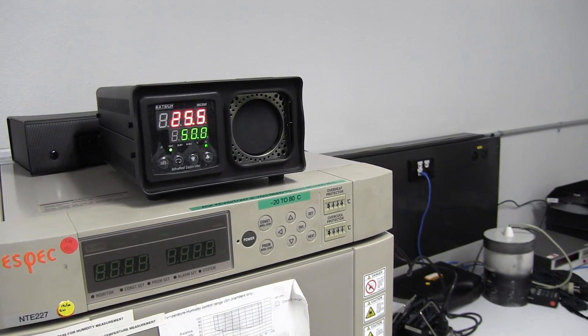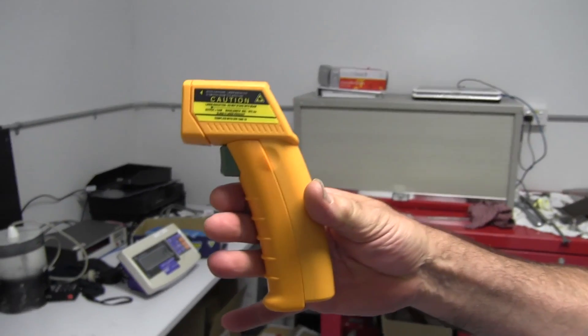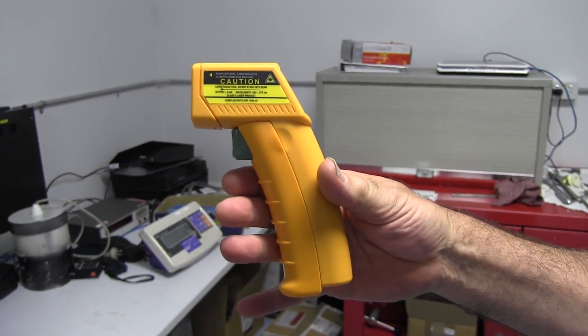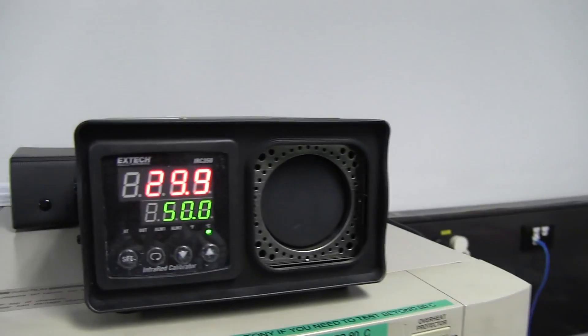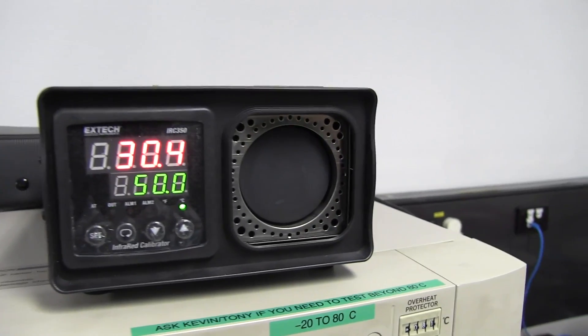Hi guys, I'm at Trio Smart Cal again with Charles in the Cal Lab, and he's got my Fluke 59 Mini IR Thermometer that you saw in the previous video.